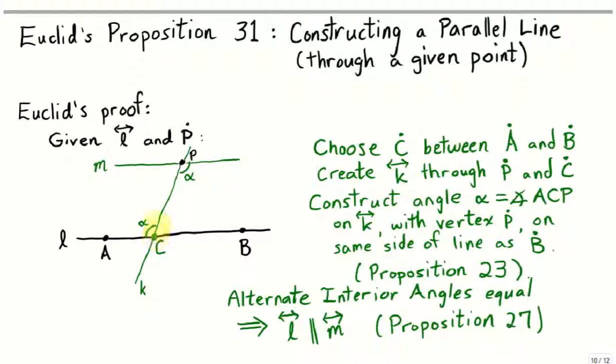and construct a copy of that angle at the point P. So, we'll construct a line M such that this angle is equal to alpha. We can do that from Euclid's Proposition 23.